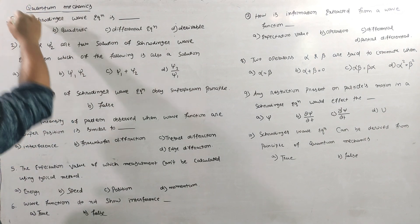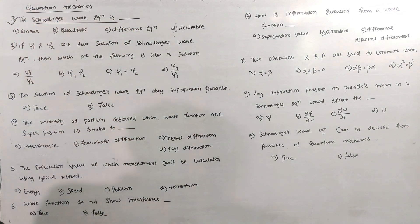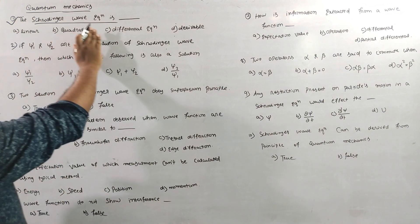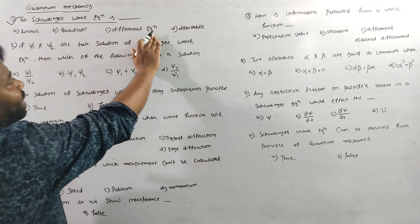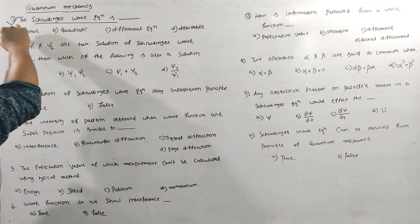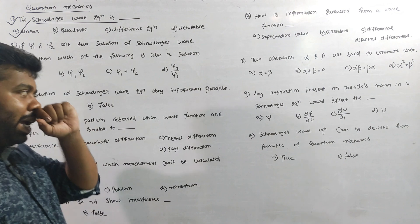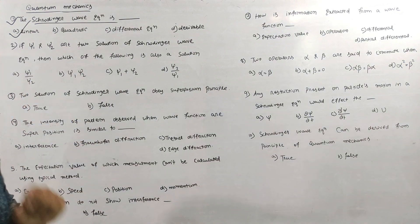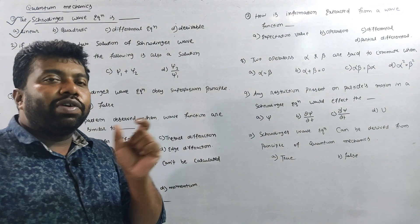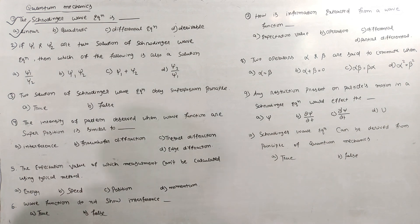First question: What is the Schrödinger wave equation? Is it a linear equation, quadratic equation, differential equation, or derivable equation? The Schrödinger equation is a linear equation. So the answer to the first question is (a).